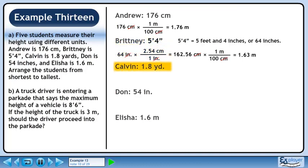Now we'll move on to Kelvin, who is 1.8 yards tall. We know that 1 yard equals 0.9144 meters. We want yards to cancel, so put 1 yard in the denominator. We want meters, so put 0.9144 meters in the numerator. 1.8 times 0.9144 gives 1.65. Yards cancel out, leaving units of meters.